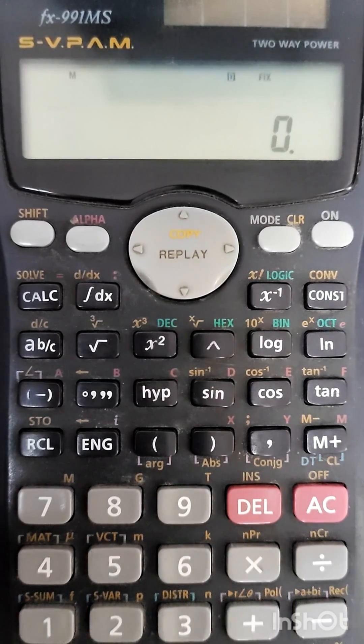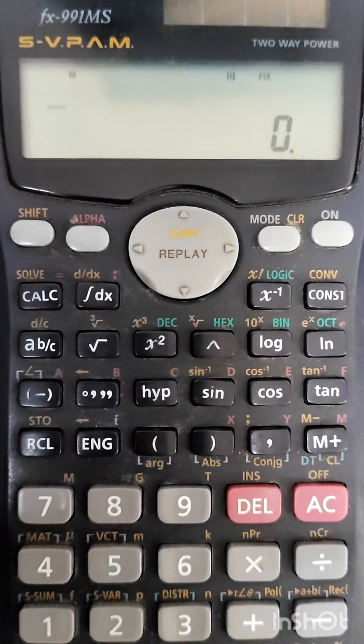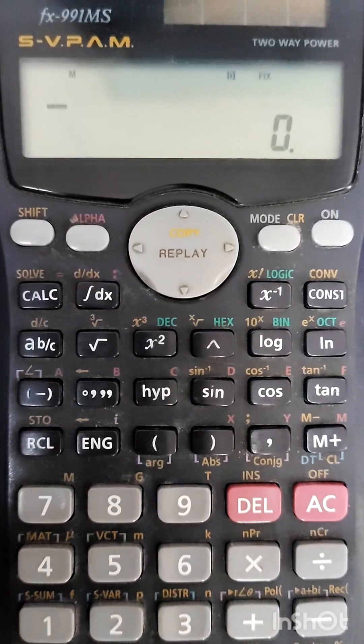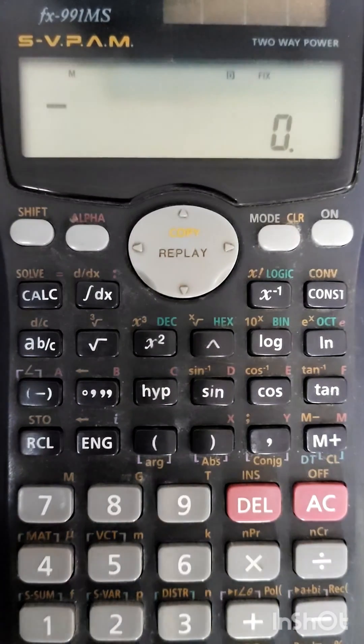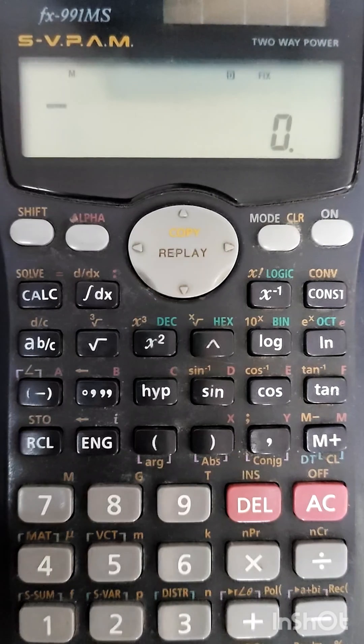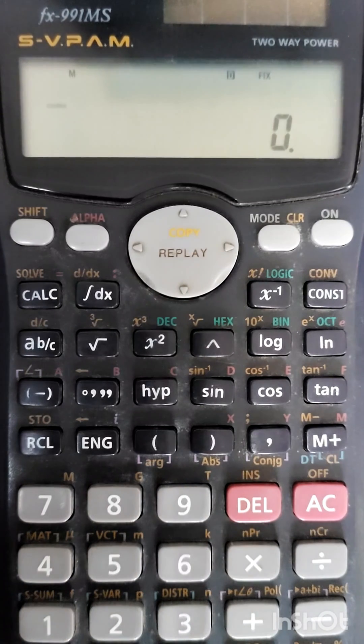Hello everyone, welcome to Civil Engineering and Stuff. In today's video lecture, we're going to learn how to set our 991MS calculator to get three numerical values after a decimal. By default, the calculator setting is that after a decimal we get nine values.